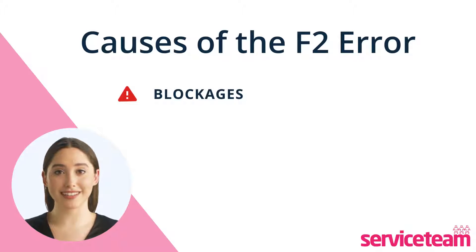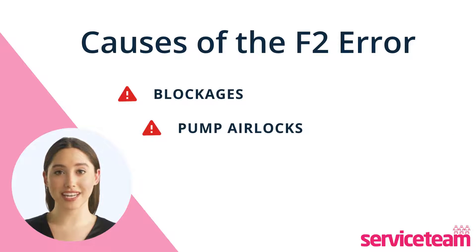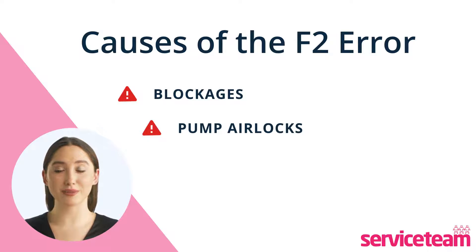As sludge builds up, it can block the pump shaft or bearings, stopping the pump from working. Trapped air in the pump can also disrupt water flow in the heating system, causing the pump to stop working. This can happen naturally as water circulates, or if a lot of air enters during work like drainage.